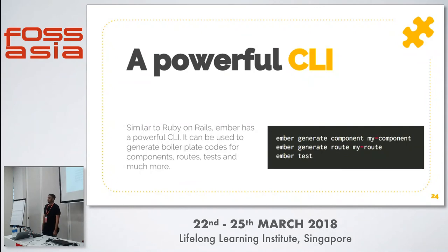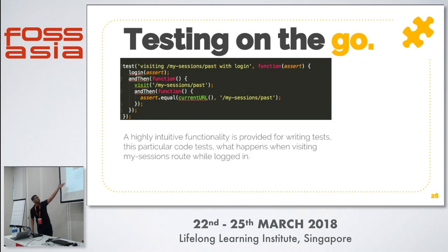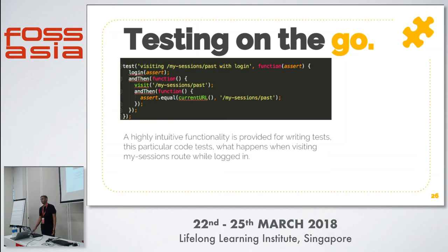Ember has a powerful CLI — you don't need to worry about boilerplate code. To generate a component, just run 'ember g component' followed by the component name, and it gets generated along with its test files. Testing in Ember is straightforward: you can write acceptance tests that visit a URL and assert the current state — for example, checking what URL appears when a user is logged in versus not logged in. Unit test boilerplate is provided as well. From day one of the project, we were encouraged to write tests and did so for all components.